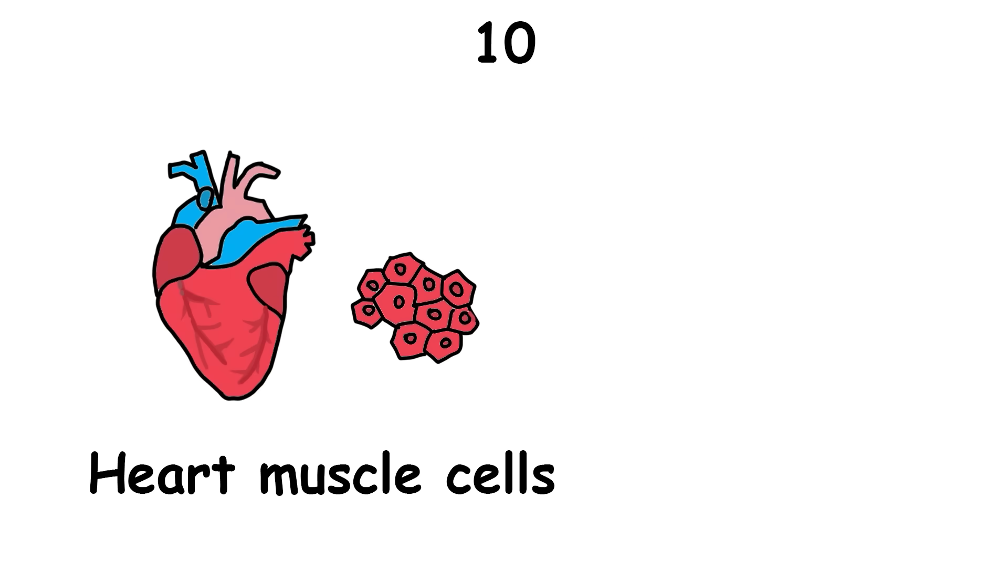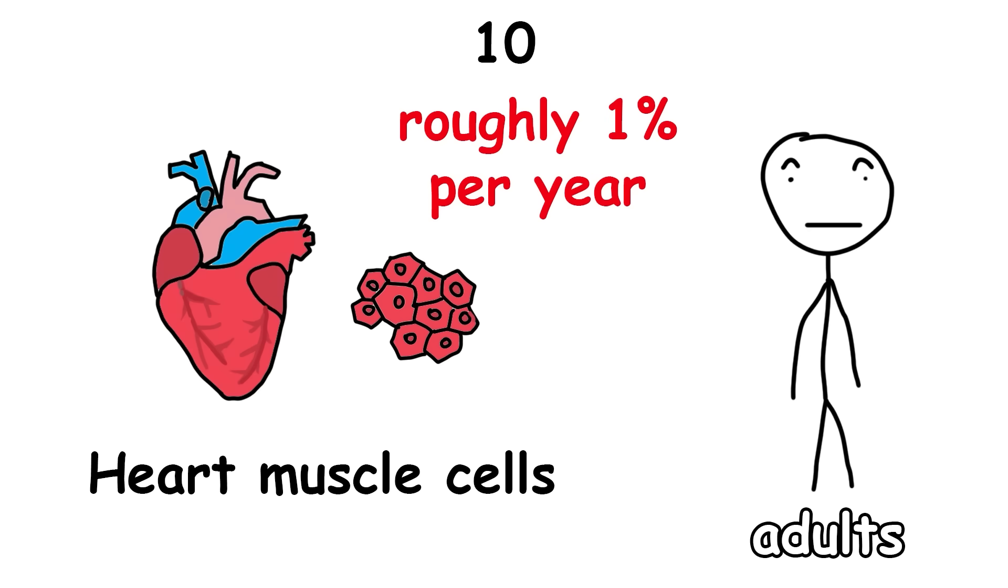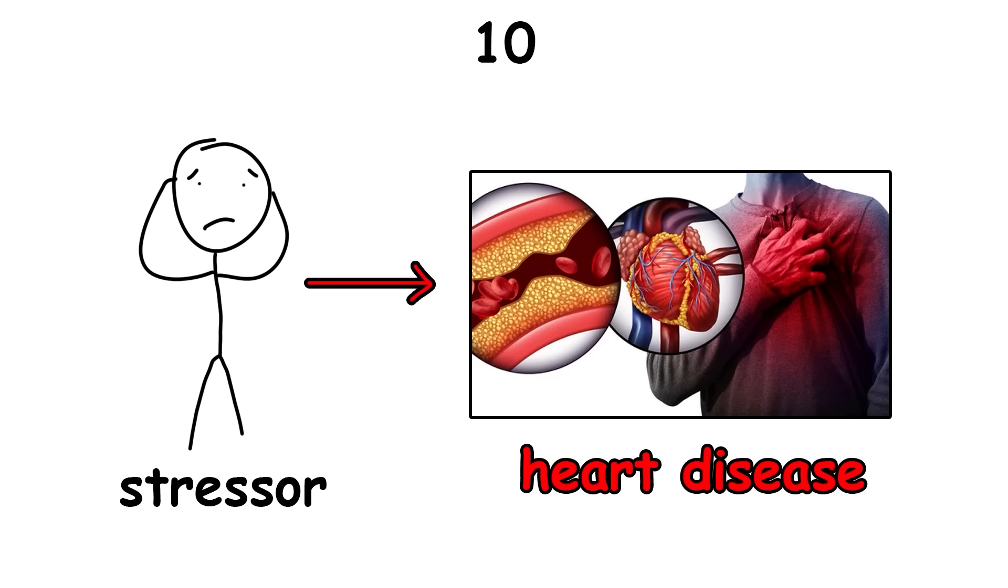Heart muscle cells don't reproduce much in adults, roughly 1% per year. So when a stressor such as heart disease kills them, they don't get replaced. It's one of the main reasons patients need heart transplants.